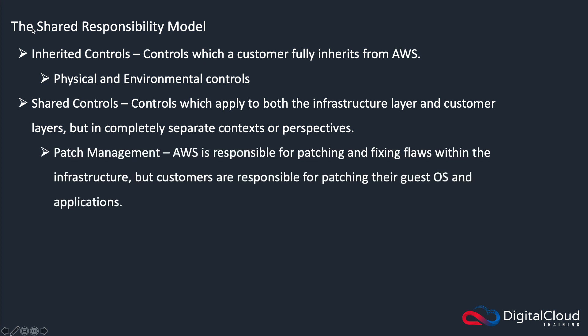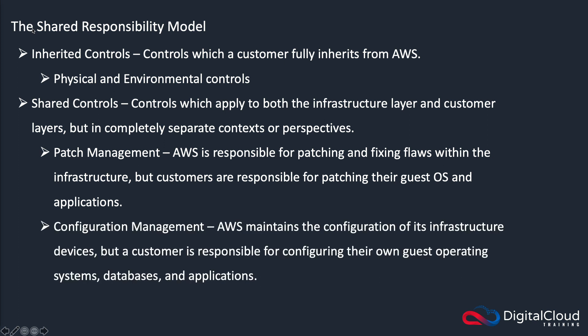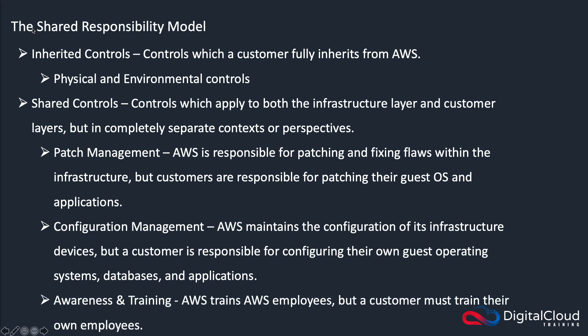There are also shared controls. Patch management is one example: AWS are responsible for patching and fixing flaws within the infrastructure, but as a customer it's up to you to install patches on your EC2 instances. Configuration management is another: AWS maintains configuration of the underlying physical infrastructure, but you're responsible for configuring your own EC2 instances, databases, and applications. Awareness and training is also shared — AWS trains their own employees, but you must train your employees to use these systems securely.